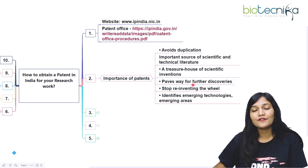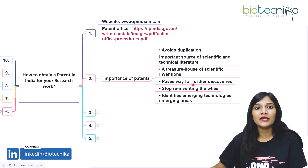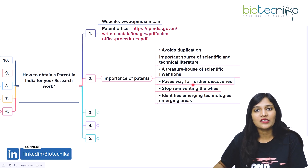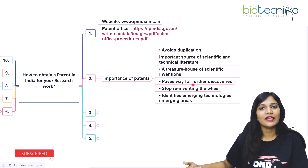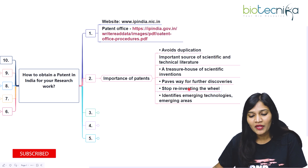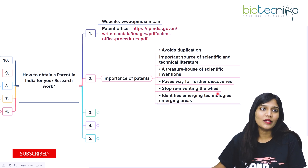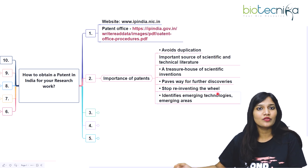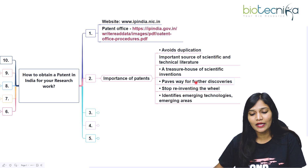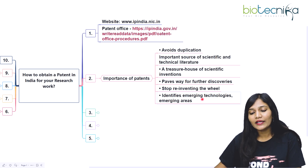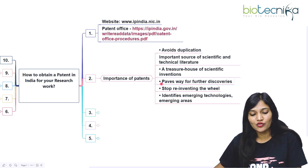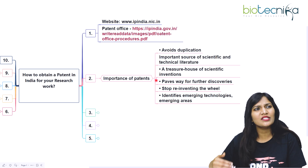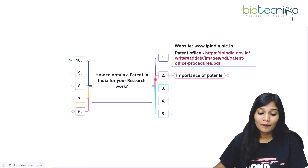A patent pays for further discoveries — if somebody has a patent on a process or product, many people will carry out new discoveries based on it. It stops reinventing the wheel, as you don't have to redo what's already been done, and it identifies emerging technologies and emerging areas. These are the most important things about patents.